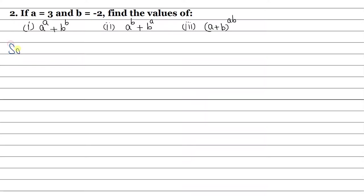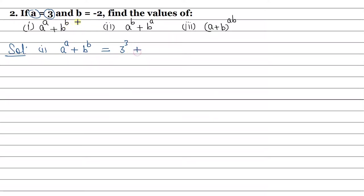Let us solve one by one. First, it is given that a to the power a plus b to the power b. We have to find the value, so we put a to the power a means 3 to the power 3, plus b to the power b means minus 2 to the power minus 2.